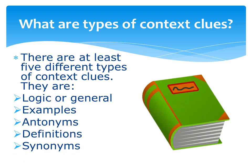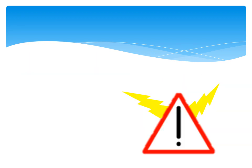There are at least five different types of context clues: logic or general, examples, antonyms, definitions, and synonyms. These context clues are used by writers of textbooks and other written materials. As a reader learns to look for these clues, they can access more text.